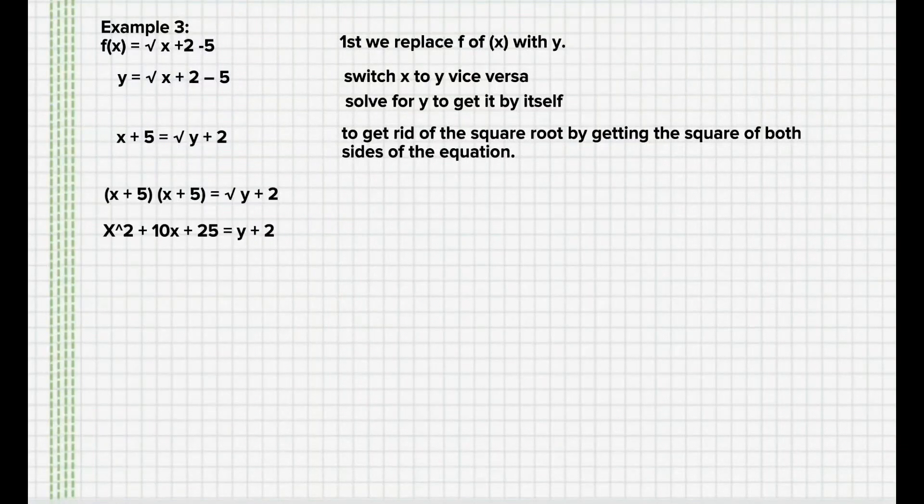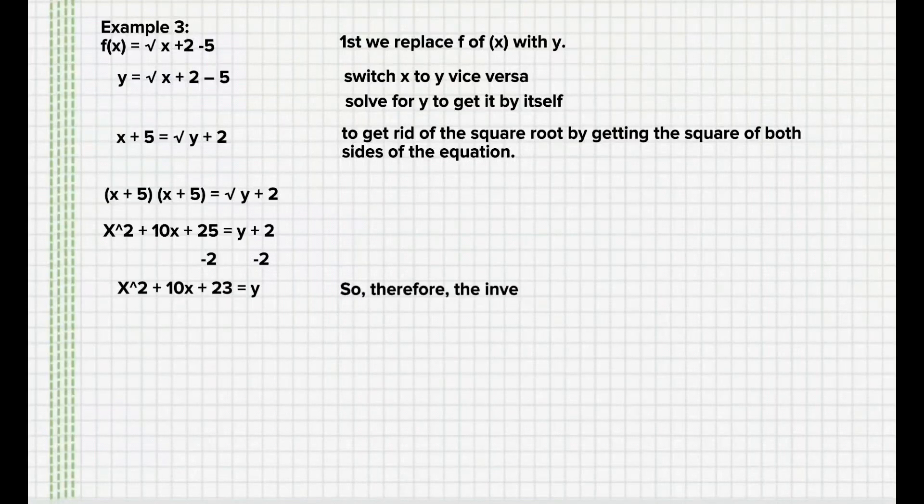So, the last thing we need to do is subtract both sides by 2. Now, we have x² + 10x + 23 = y. So, therefore, the inverse of the function is x² + 10x + 23.